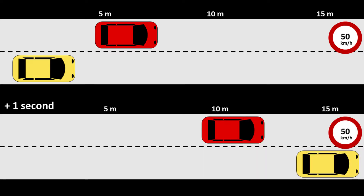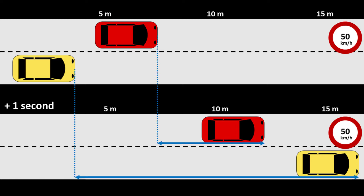So you take another picture one second later, and it becomes clear that the yellow car is much faster than the red car. But should you give the yellow car a speeding ticket? The best way to find out is by measuring the speed, which is the distance traveled between the two pictures divided by one second. Now you can see that none of them are speeding — the red car is just going very slow.